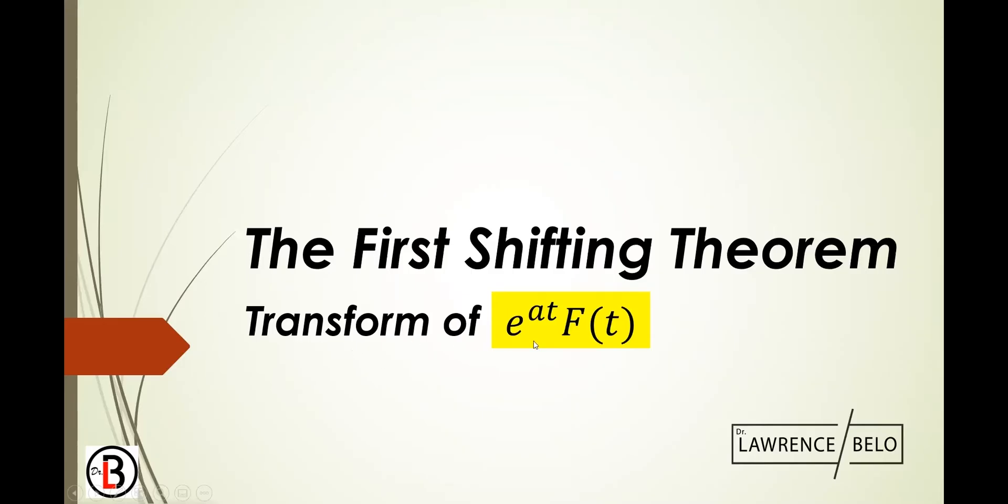Now, I'll teach you the first shifting theorem. So basically, the transform of this form. At the moment, what you have solved so far, or basically transformed so far, are functions of t. Purely f of t, that's it.